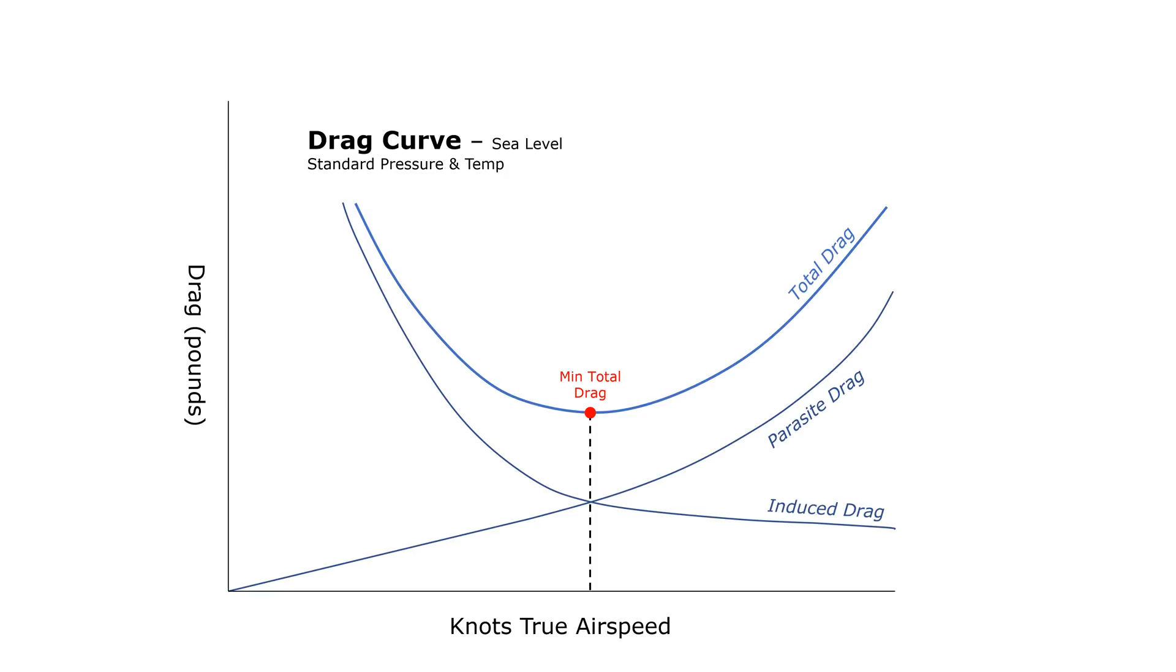This speed is special for our aircraft. It represents our best glide speed, or VG. When we can fly with a certain amount of lift and the lowest possible drag, we can fly the furthest for a given loss of altitude. When we practice engine outs, we typically aim to be at this speed to give ourselves the best chance to glide to a safe spot.